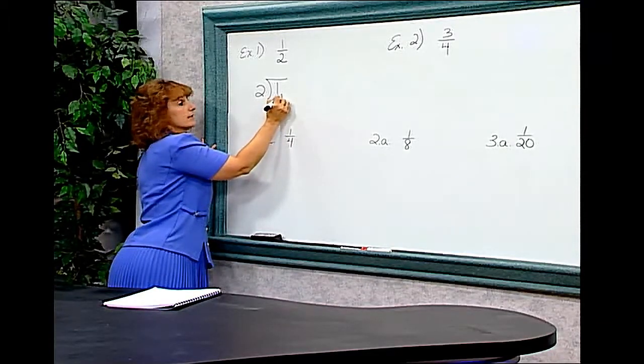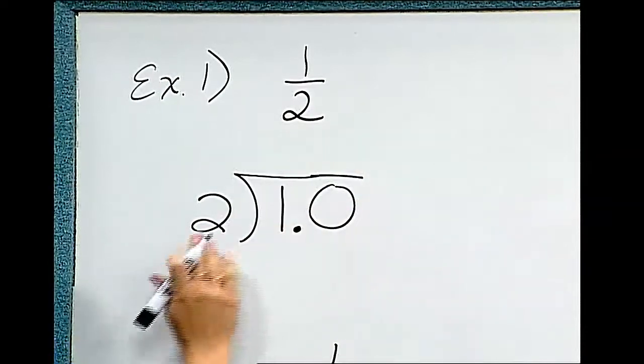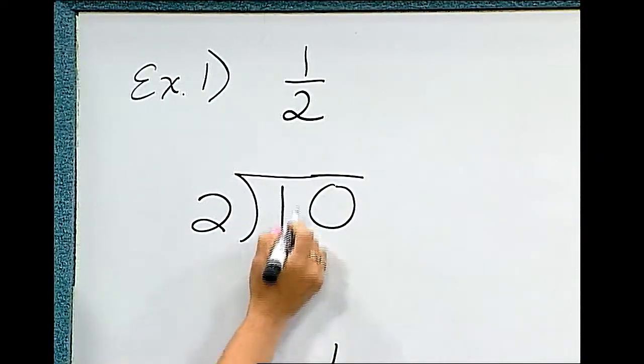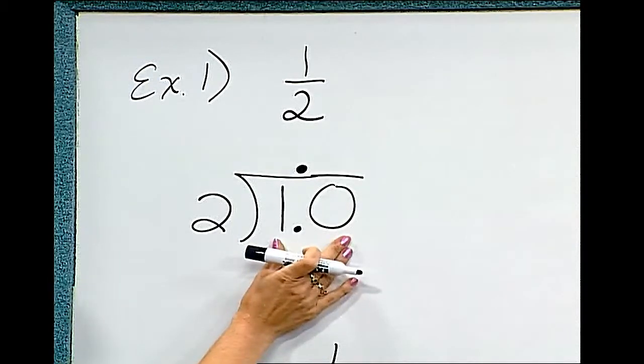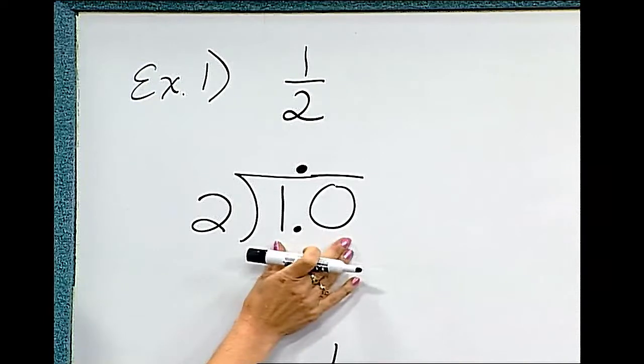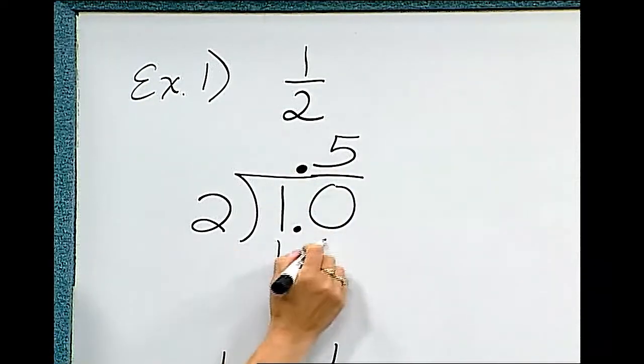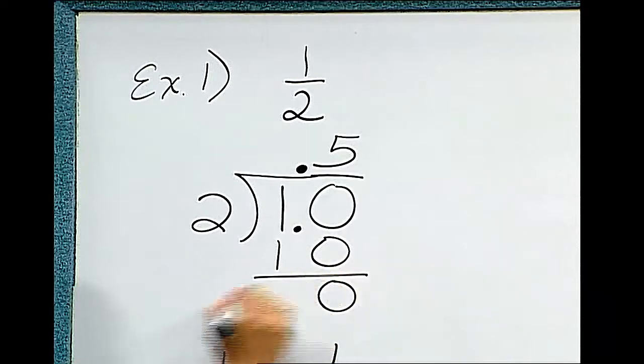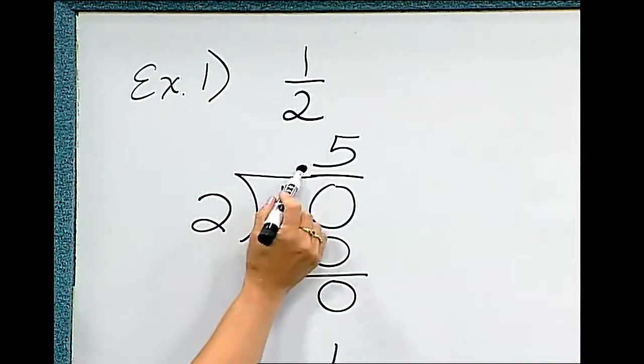So we're going to place a decimal point and a 0 so that we can divide. The decimal point comes straight up, and now you can treat the 1.0 as 10. 2 divides into 10 5 times. 5 times 2 is 10, and we get no remainder. So 1 half as a decimal is 0.5.